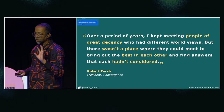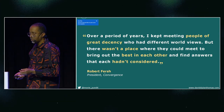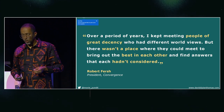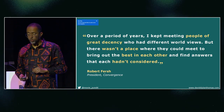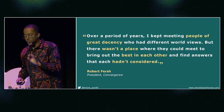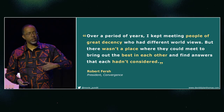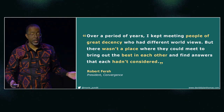Robert Firsch, who created the Converge Center for Public Policy in D.C. — whose mission is to get people from opposite sides of the table to come to the same table — says this: 'Over a period of years, I kept meeting people of great decency who had different world views, but there wasn't a place where they could meet to bring out the best in each other and find answers that each hadn't considered.' Key phrases there: people of great decency, wasn't a place, best in each other, and hadn't considered — because we often go in thinking we've already considered all angles, and that is a critical mistake.